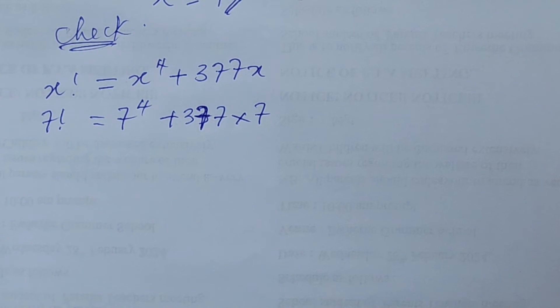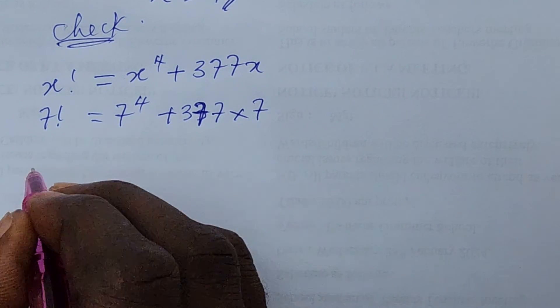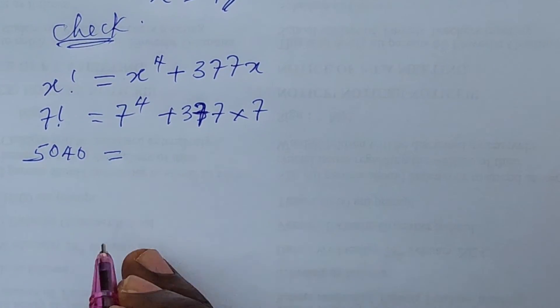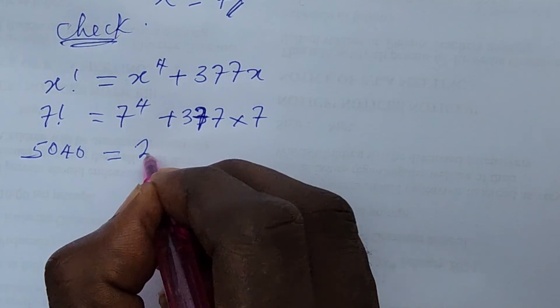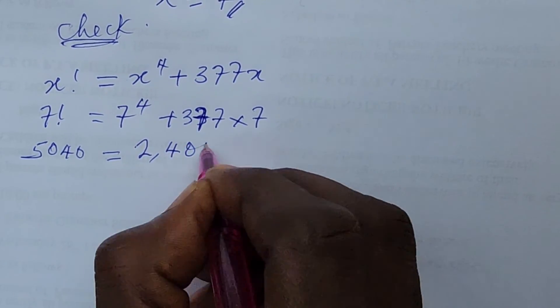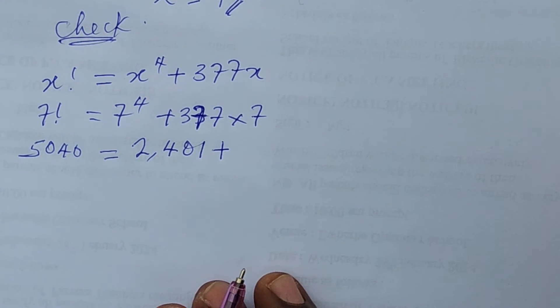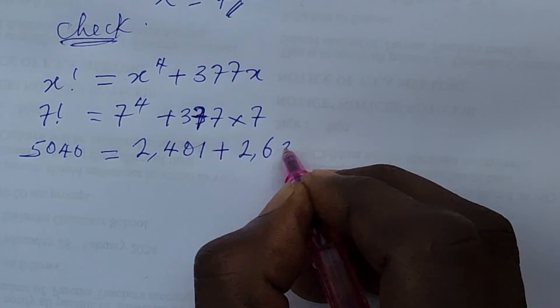7 factorial will automatically give us 5040. So we have here to be 5040 is equal to 7 to the power of 4 gives us 7 times 7 times 7 times 7 to 4 places. And we know that that will give us 2401 plus your 377 that will give us 2639.